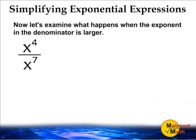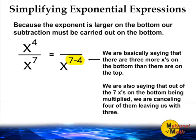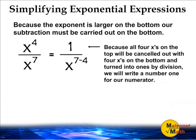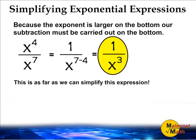Now let's examine what happens when the exponent in the denominator is larger. Because the exponent is larger on the bottom, our subtraction must be carried out on the bottom. We are basically saying that there are three more x's on the bottom than on the top, and that out of the seven x's on the bottom being multiplied, we are canceling four of them, leaving us with three on the bottom. Because all four x's on the top will be canceled out and turned into ones by division, we will write a number one for our numerator. Note that we are not dividing by one in this example. If you have a number one as your numerator, you must leave it there. This is as far as we may simplify this expression.